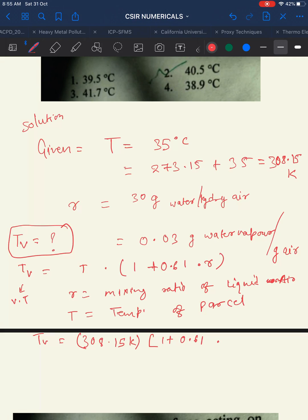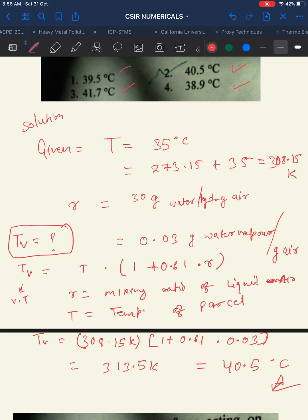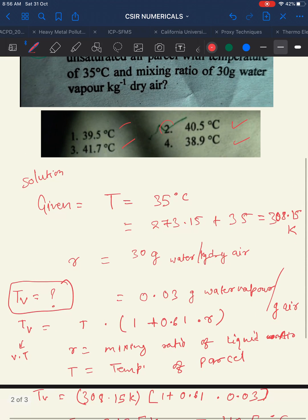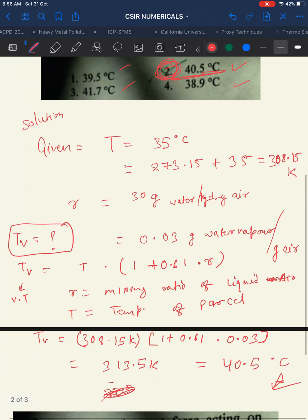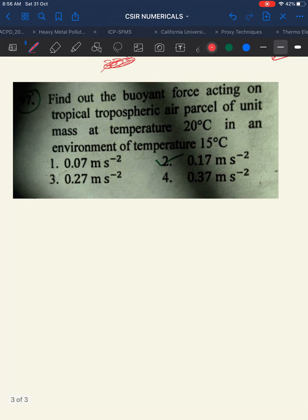Substituting: TV = 308.15 × (1 + 0.61 × 0.03). Solving this gives 313.5 K. Converting to degrees Celsius by subtracting 273 gives 40.5°C. So the answer for the first question is 40.5°C.